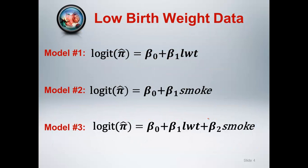Here are the three models: weight at last menstrual period, smoking status, and then the two together. We're going to show the R code to estimate each of these beta coefficients in the different models.